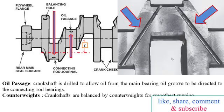Crankshafts are either forged or cast. Forged crankshafts are made from SAE grade steel, which provides a wide separating line and is stronger than cast crankshaft, but is very expensive. Cast crankshafts may be cast in steel, nodular iron, or malleable iron.